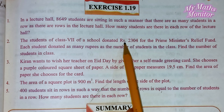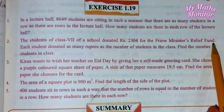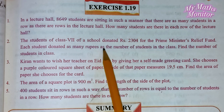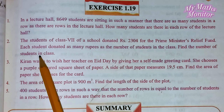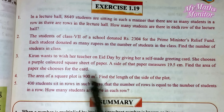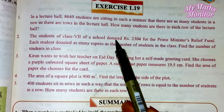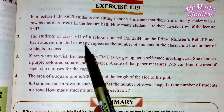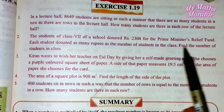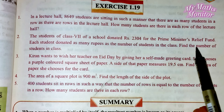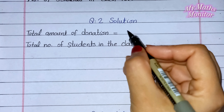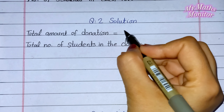Question number 2: The students of class 7th of a school donated rupees 2,304 for the Prime Minister's Relief Fund. Each student donated as many rupees as the number of students in the class. Find the number of students in class. Question number 2 میں بتایا ہوا ہے — ہر طالب علم نے اتنا چندہ دیا ہے جتنی جماعت کے طالب علموں کی تعداد تھی۔ یہاں پہ ہم نے جماعت کے طالب علموں کی تعداد معلوم کرنی ہے۔ Given: total amount of donation — rupees 2,304۔ Total number of students in the class معلوم کرنا ہے۔